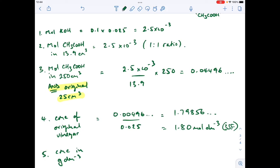So all I've got to do is turn the moles of ethanoic acid into grams. So mass equals moles times Mr. So all I'm going to do is take that 1.80 moles per decimeter cubed, multiply by the Mr of ethanoic acid which is 60, and that gives me, to three significant figures, 108 grams per decimeter cubed.